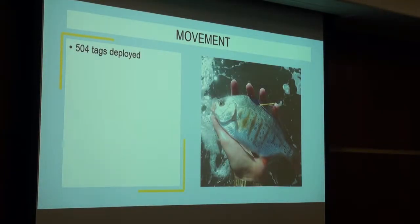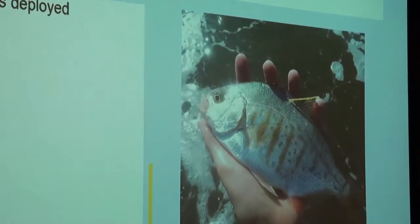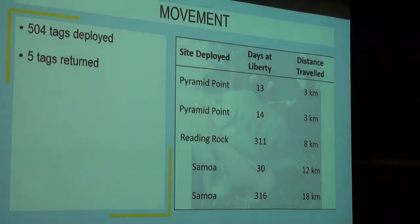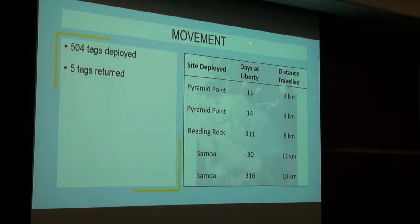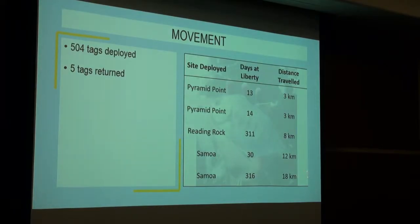Looking at movement: over the two years, we deployed 504 T-bar tags — a small plastic bar inserted into the fish. After two years of deploying tags, we have five tag returns to date. The deployment site, days at liberty, and distance traveled are shown in the table. Days at liberty ranged from 13 days to almost a year, and distance traveled ranged from 3 to 18 kilometers.